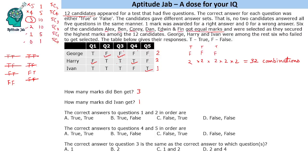Ivan got 1 mark in the test. The correct answers to Q1 and Q2 in order are both false. The correct answers to Q4 and Q5 in order are both true. The correct answer to Q3 is false, which is the same as the correct answers to Q1 and Q2. So the answer to the question about which questions share Q3's answer is: questions 1 and 2.